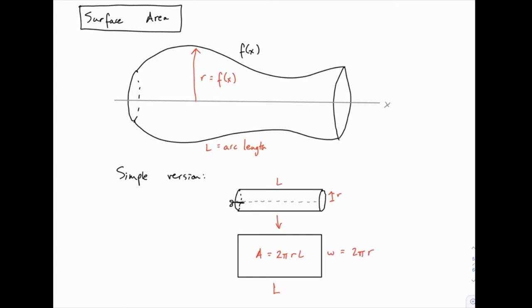So without going into a lot of derivation of why this works, we can just use this analogy of the really simple case to the more complicated case, to see that surface area is going to be the same thing, 2πRL, but for R we'll use the function f(x), and for L we'll use the integral that describes arc length.